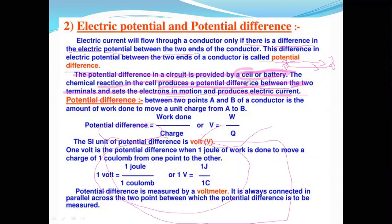Chemical reactions in the battery produce potential difference between the two terminals and set electrons in motion, producing electric current. Potential difference between two points A and B of a conductor is the amount of work done to move a unit charge from A to B. Potential difference equals work done divided by charge.